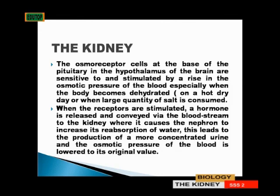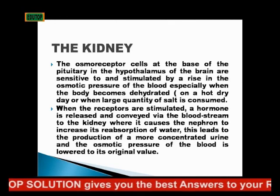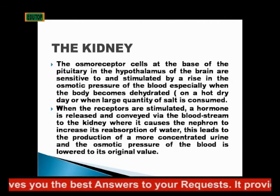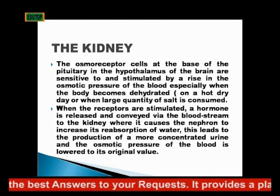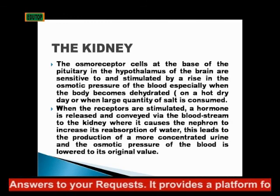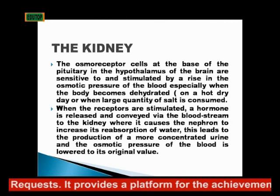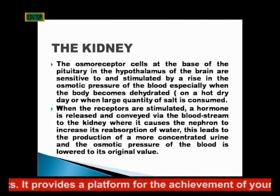The osmoreceptor cells are at the base of the pituitary gland in the hypothalamus of the brain. In the brain, we have the hypothalamus, then we have the pituitary gland there, and it is located at the back towards your neck — that's where we have the hypothalamus. They are sensitive and are stimulated by a rise in the osmotic pressure of the blood, especially when the blood becomes dehydrated on a dry day.